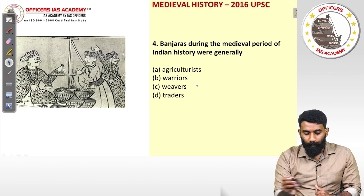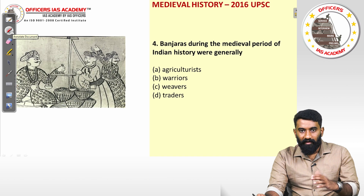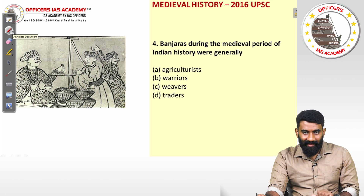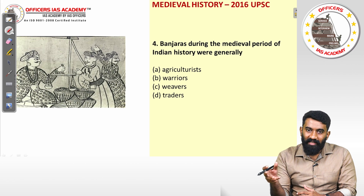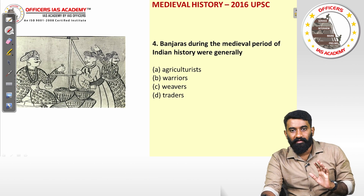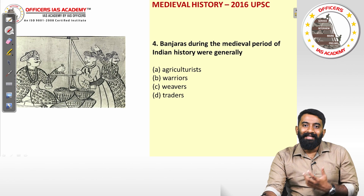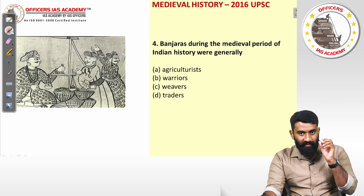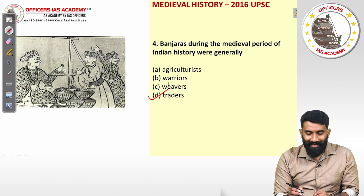Question four: Banjaras during the medieval period were generally — without even looking at the options, the answer is traders. Alauddin Khalji used Banjaras to purchase food grains from peasants and sell them to retailers and marketers in towns and cities. So Banjaras were traders involved in the supply chain of goods, specifically mentioned during the time of Alauddin Khalji. The answer is option D, traders.